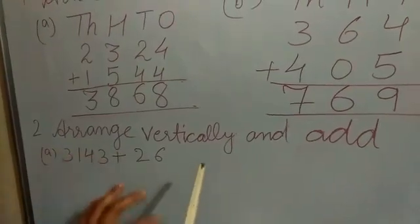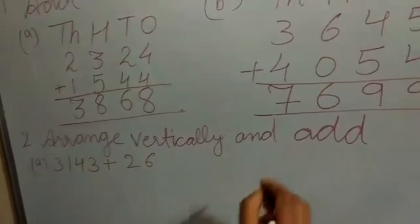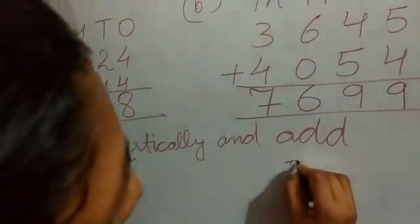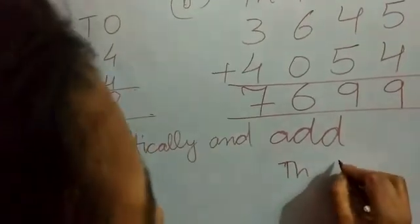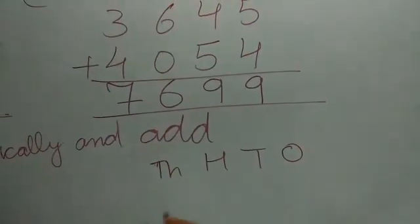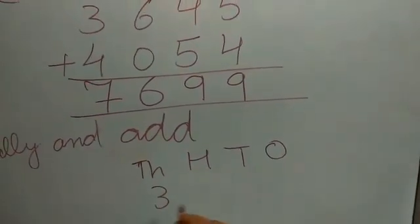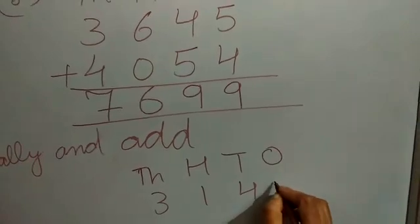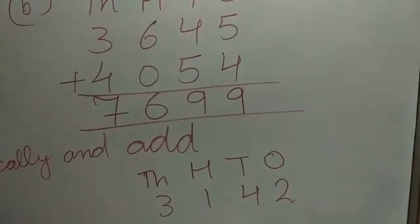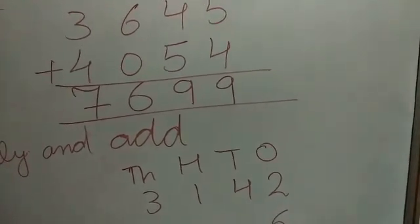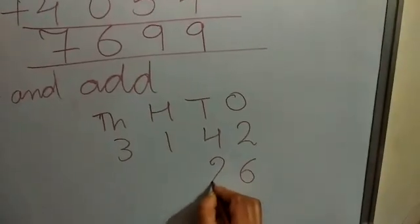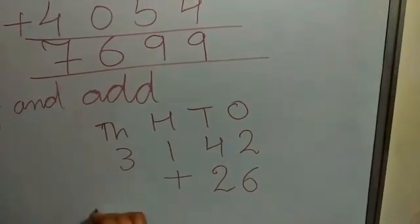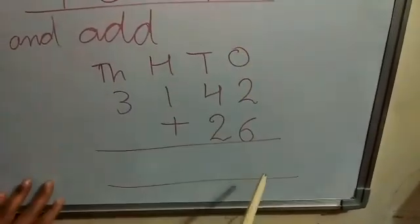So firstly we arrange it vertically. So see, 1000, 100, 10s and 1s place. So 1000 place is 3, 100 place is 1, 10 place is 4, and 1s place is 2. And here is 1s place 6 and 10s place is 2. See, I have arranged this sum vertically.